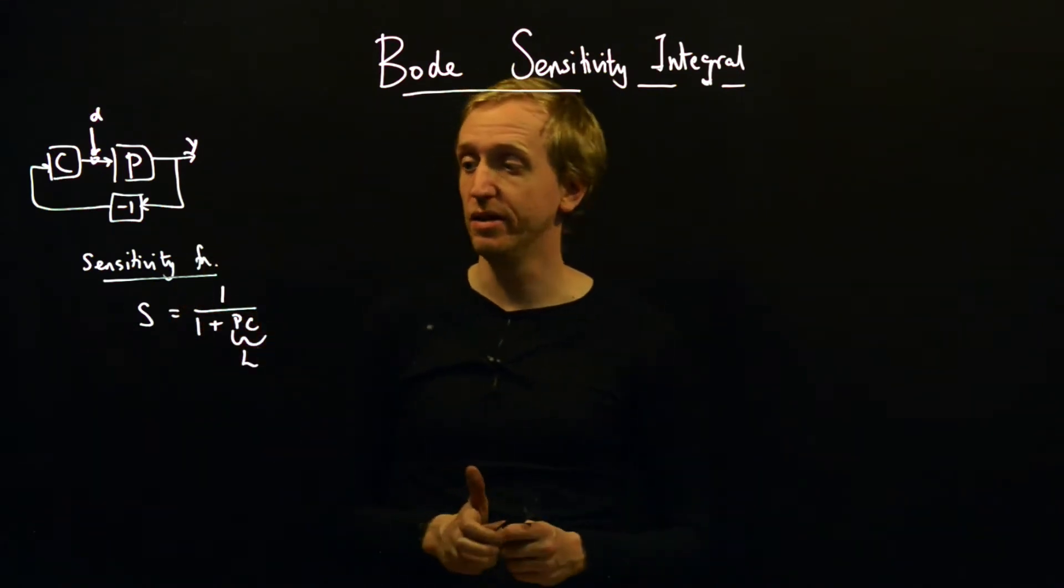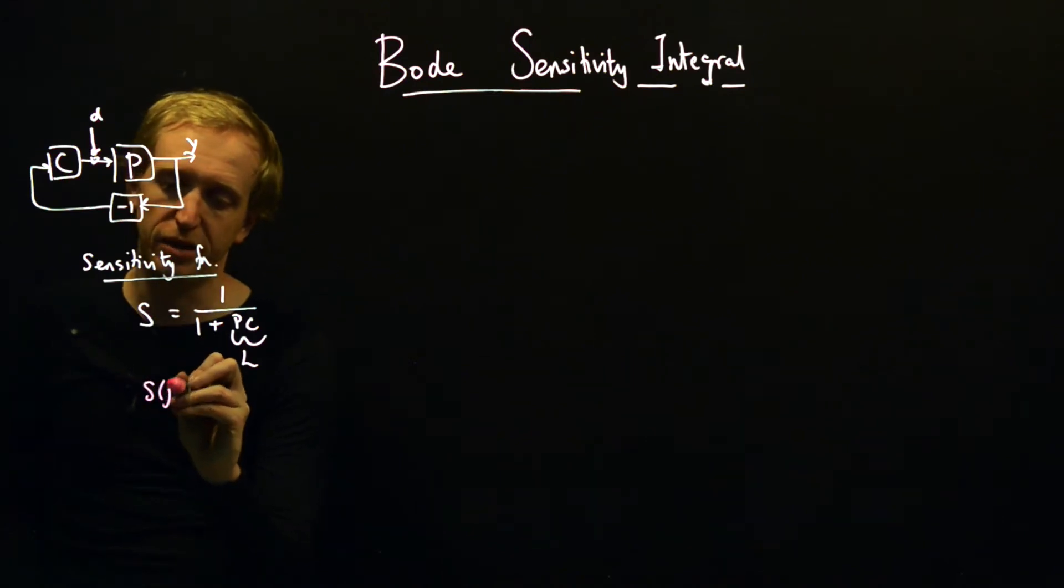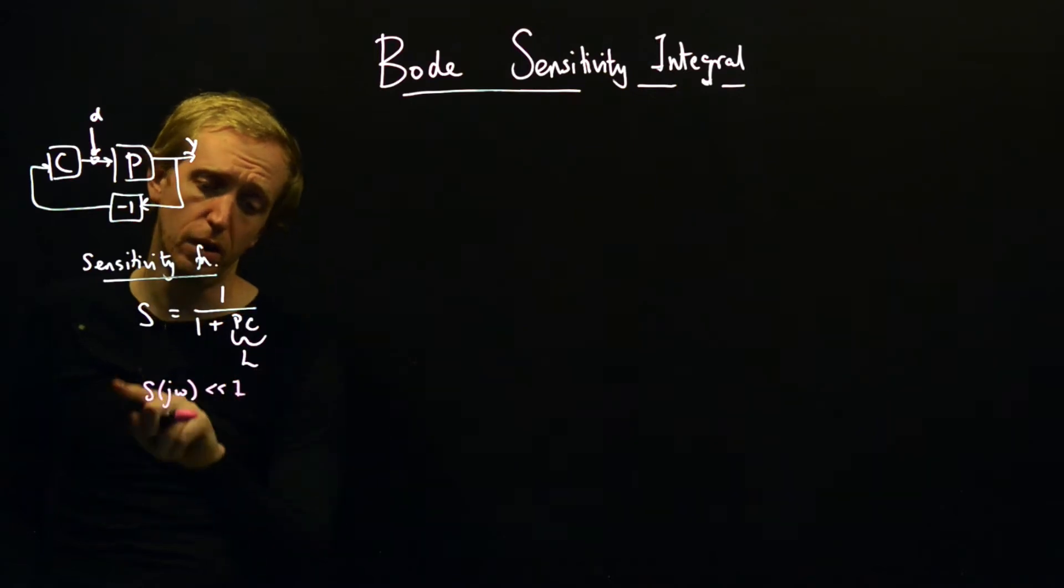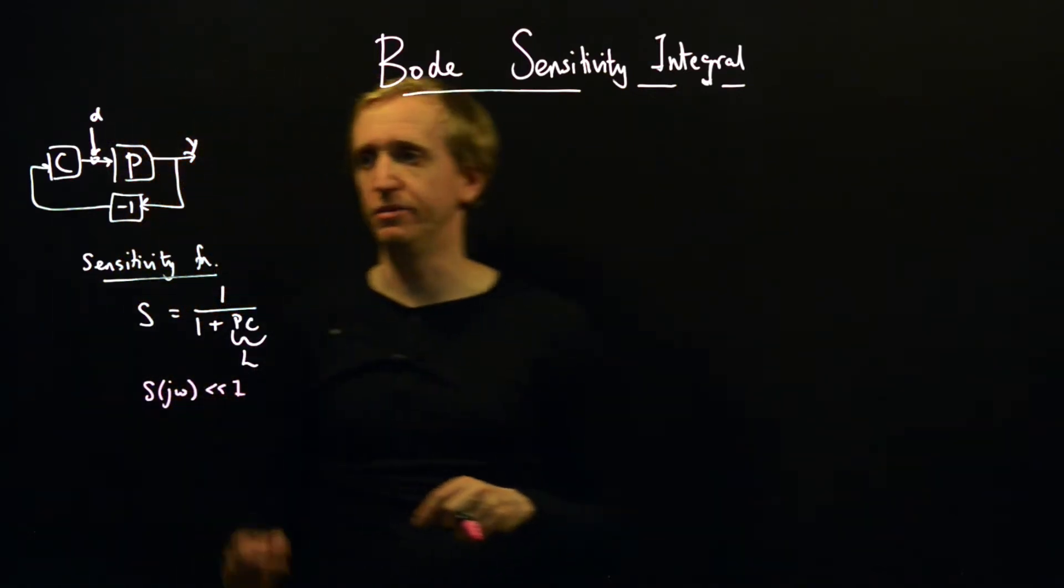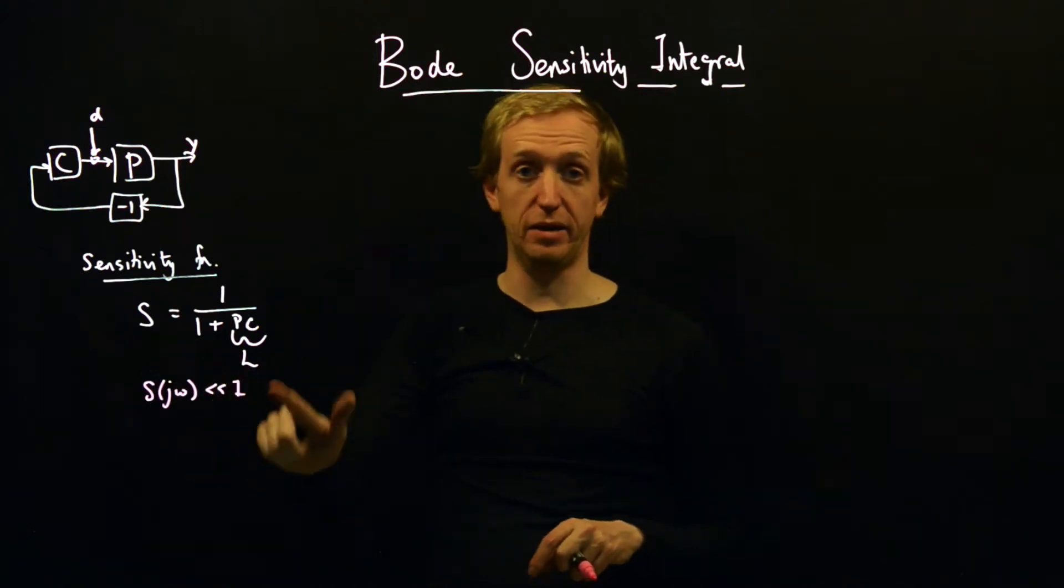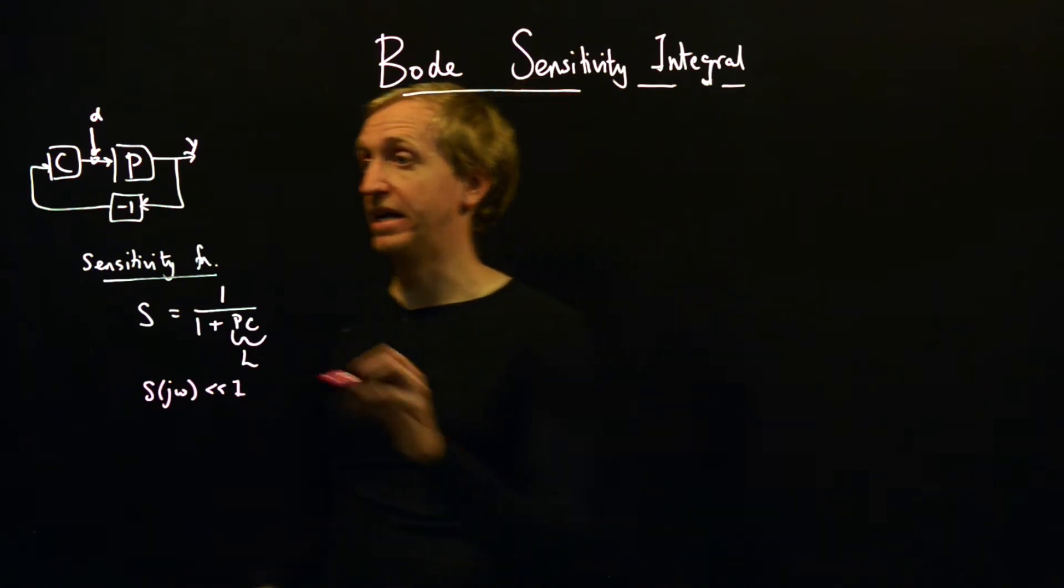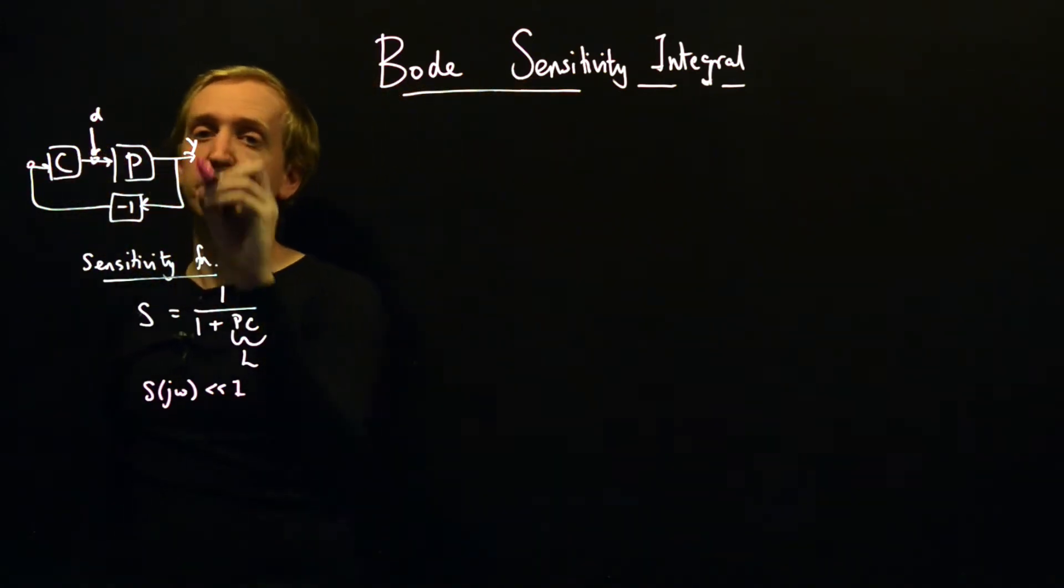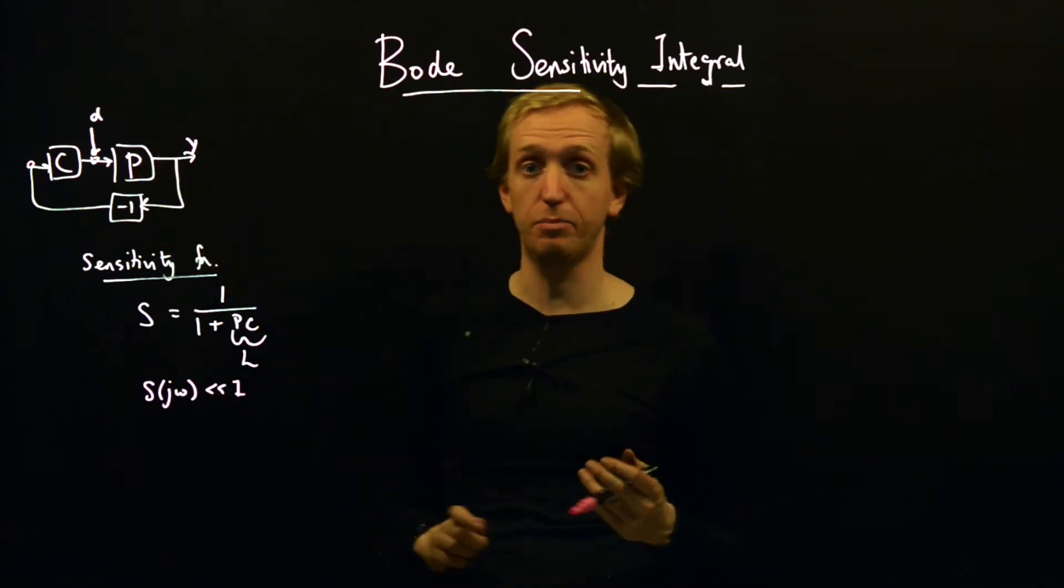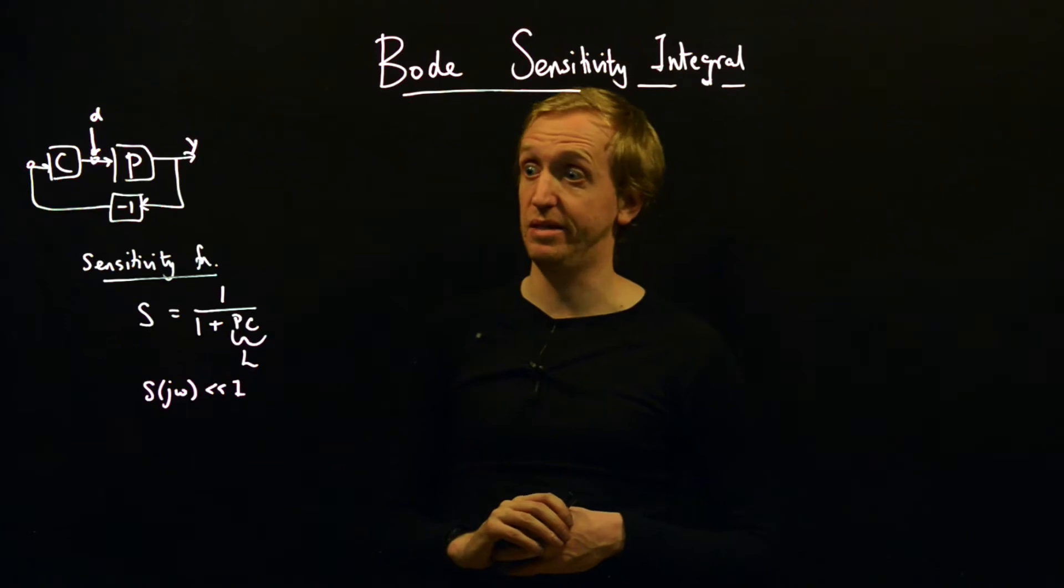So it's this absolutely central object. And in particular we saw that S of jω being very small was good for a number of objectives. If we wanted good disturbance rejection, we wanted very small values of the sensitivity function. If we wanted the behavior from some reference to the output y to not depend very much on changes in the process, then we wanted a small value of the sensitivity function.